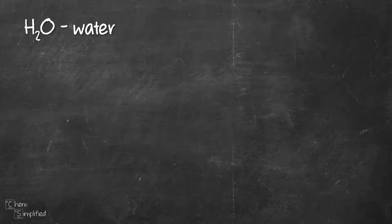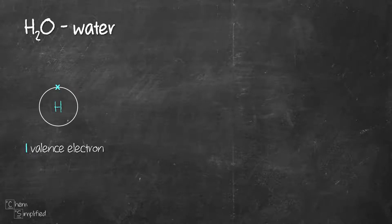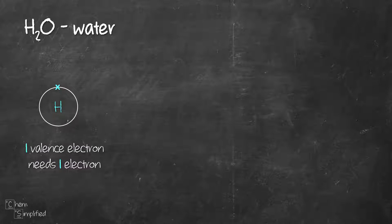Let's start with water, which is H2O. Hydrogen has one electron, and since that one electron is in shell number one, it will need one more electron to achieve a full valence shell like helium. Keep in mind that the first shell can only hold a maximum of two electrons, which is why hydrogen only needs one more electron.